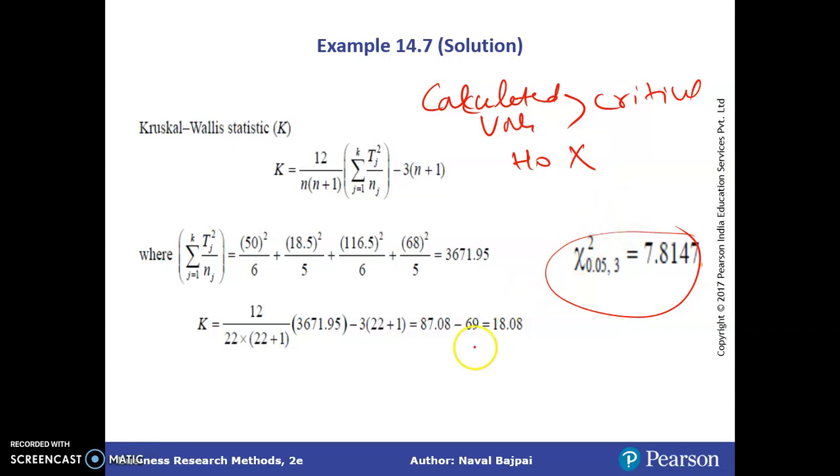So in present case, our value is 18.08, which is greater than 7.8147. What we will say? We will say H naught is rejected or we cannot accept H naught.